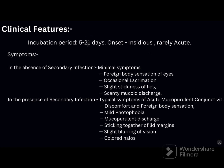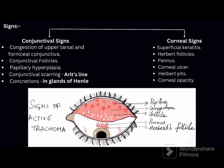The incubation period varies from 5 to 21 days. The onset of trachoma is insidious or subacute; rarely it can be acute. Without secondary infection, symptoms are minimal: mild foreign body sensation, occasional lacrimation, slight stickiness of the lid, and scanty mucoid discharge. With secondary infection, symptoms are typical of acute mucopurulent conjunctivitis: discomfort, foreign body sensation, mild photophobia, mucopurulent discharge, sticking of lid margins, slight blurring of vision, and colored halos.